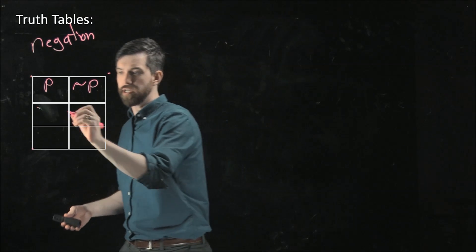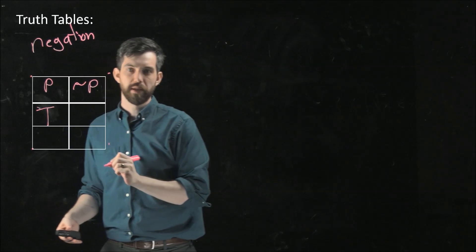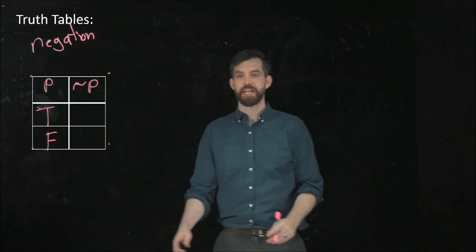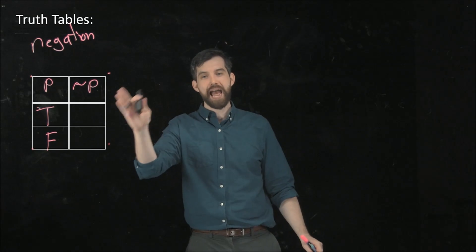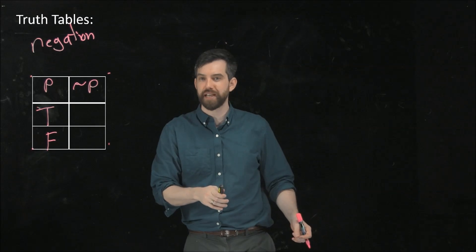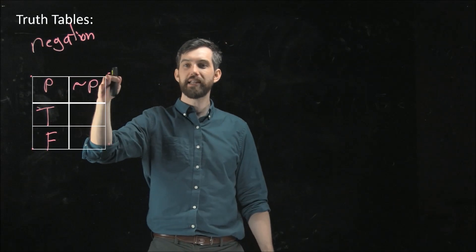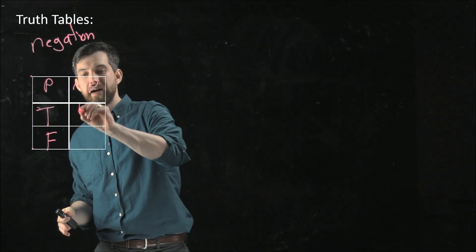Well, it could be that this is going to be true, and it could be that this is going to be false. Those are my two different possibilities for my statement p. But now that I have those, I can fill out the rest of it. Because if my statement p is true, then negating that statement must be false.